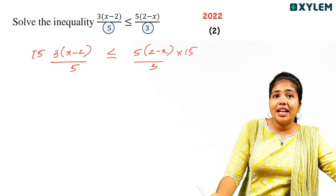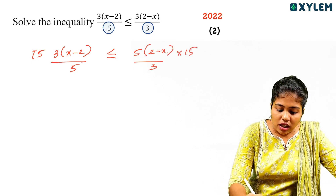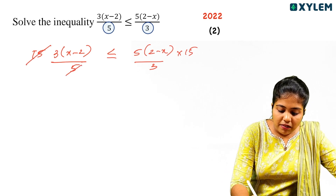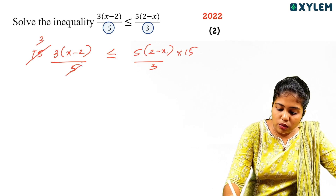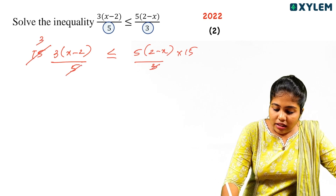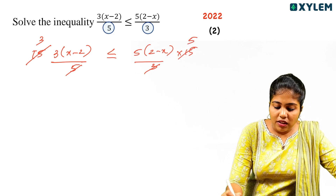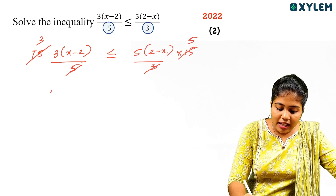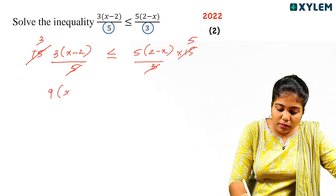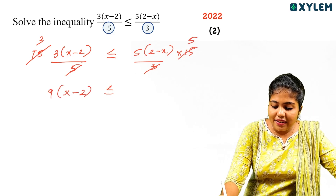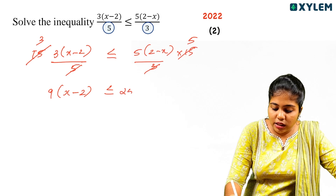If you cancel 15 and 5, you get 3. Then 3 into 3 is 9. So we get 9 times (x minus 2) less than or equal to 25 times (2 minus x).